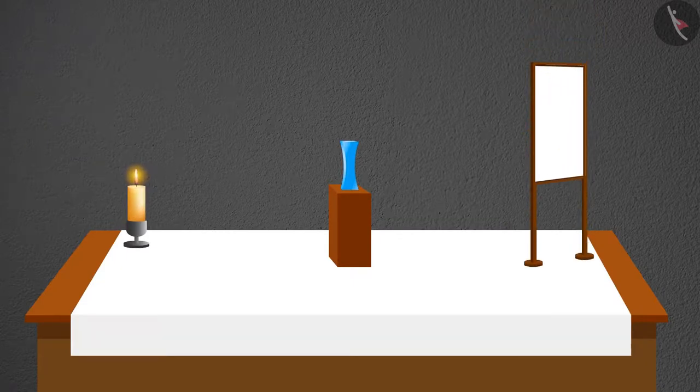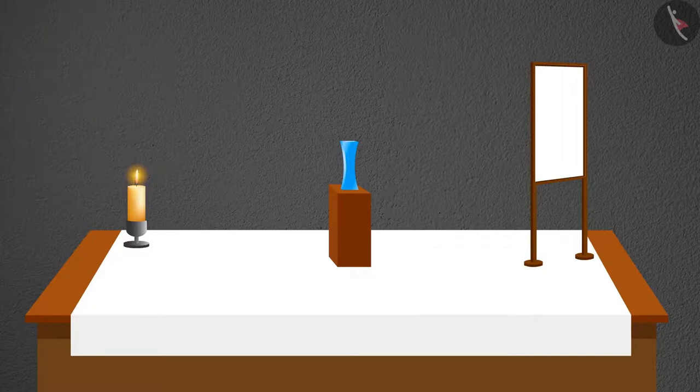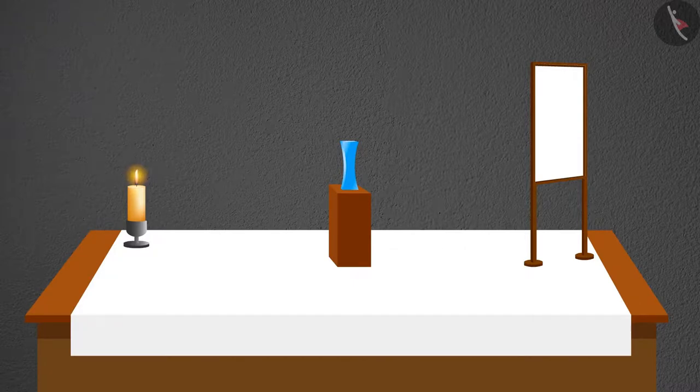Remember, in the case of a convex mirror, we can only place the object in two places. But here, because of having two surfaces, we can place the object in different places. Let's try it.